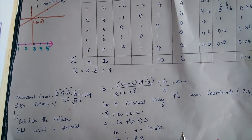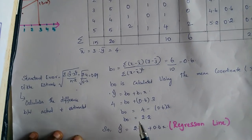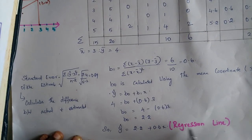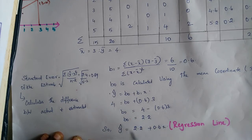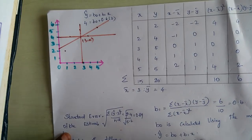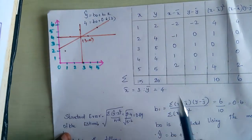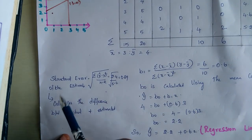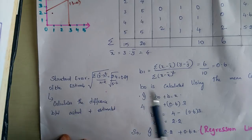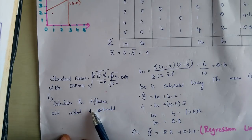So what we have seen today is how to come up with a regression line that can be used to predict values of variables which have a linear relationship between them — by finding the line of best fit using the least squares equation. We have also seen how to find the standard error of the line of best fit. Thank you.